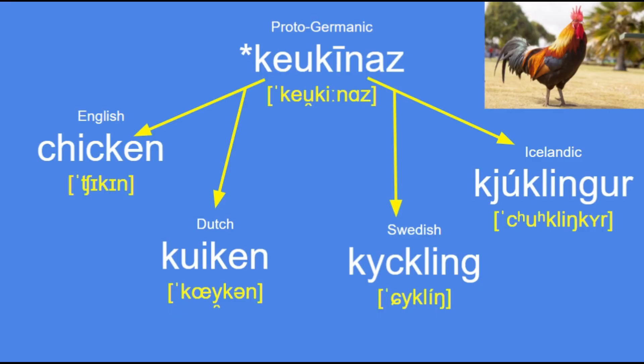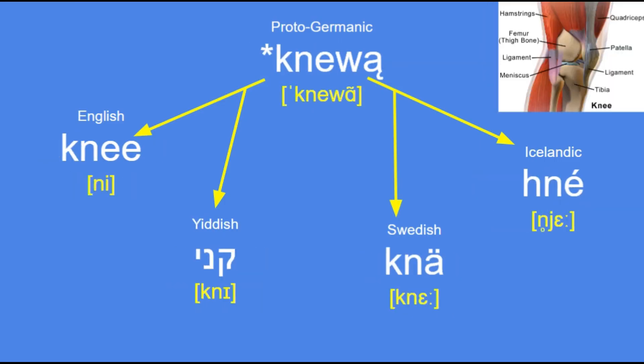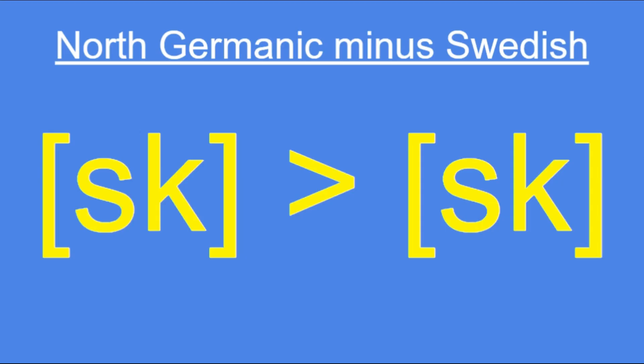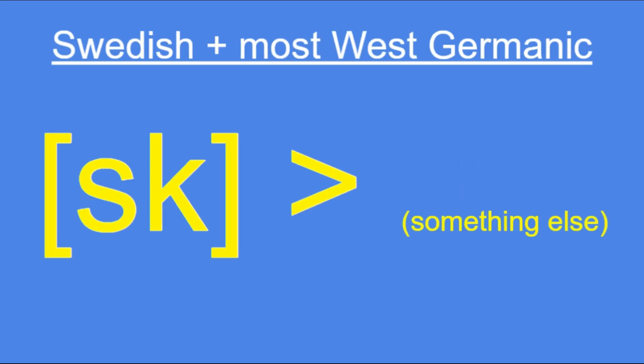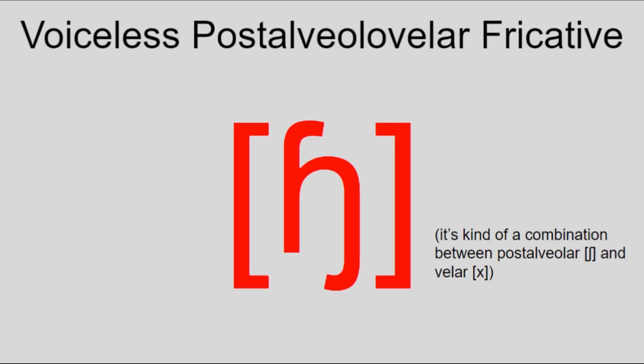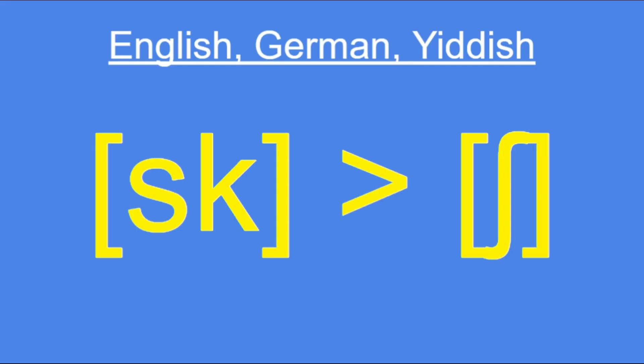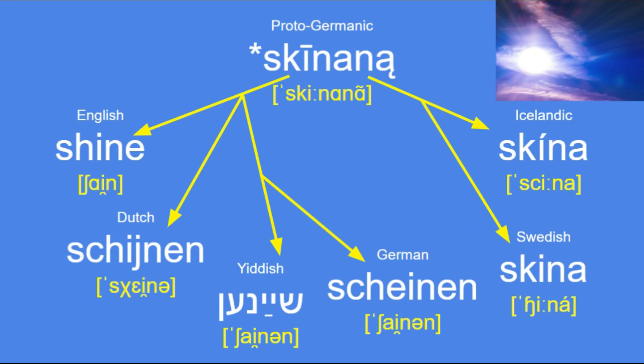For example, Proto-Germanic *kukkīnaz became Dutch keuken, Icelandic eldhúskökur, Swedish hjukling, and English chicken. There was also Proto-Germanic *knewą, which became Swedish knä, Yiddish kni, Icelandic kné, and English knee — the k disappeared before n. Finally, there's the Proto-Germanic cluster sk, especially around high front vowels. In several languages it just stayed as sk or the k acted as expected. However, in Swedish this combination resulted in the voiceless postalveolar fricative sj-sound, while in English, German, and Yiddish the result was the voiceless postalveolar fricative sh, and in Dutch the s remained but the k shifted to the palatal fricative. To show this: Proto-Germanic *skīnaną became Icelandic skína, Swedish skina, German and Yiddish scheinen, Dutch schijnen, and English shine.